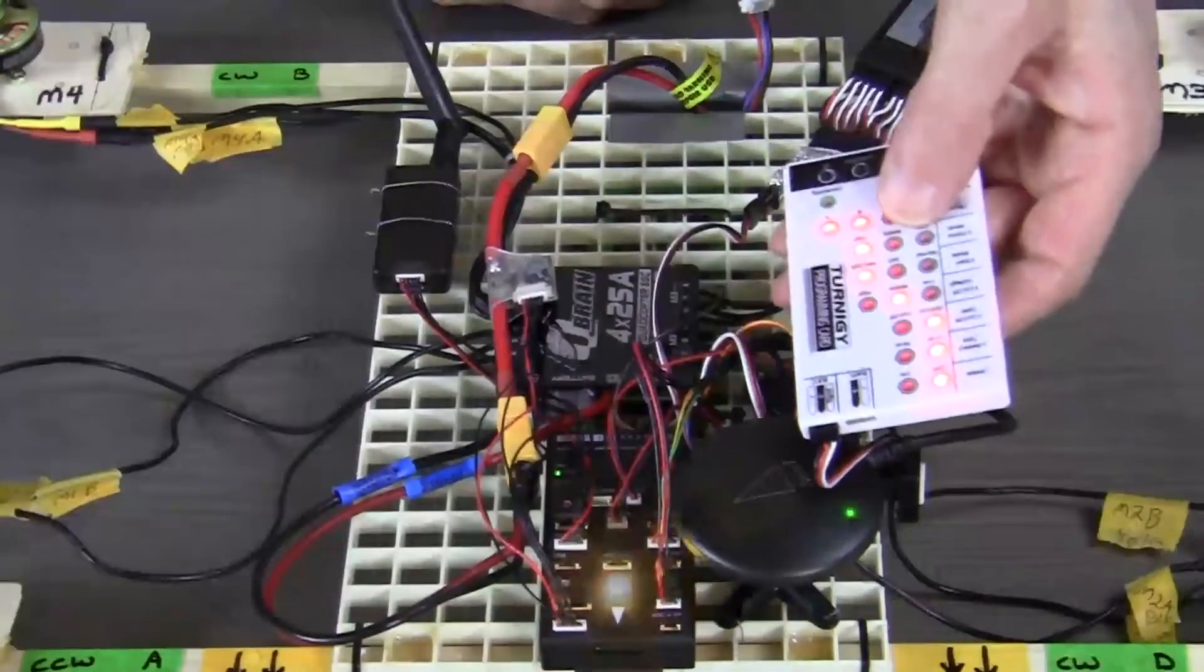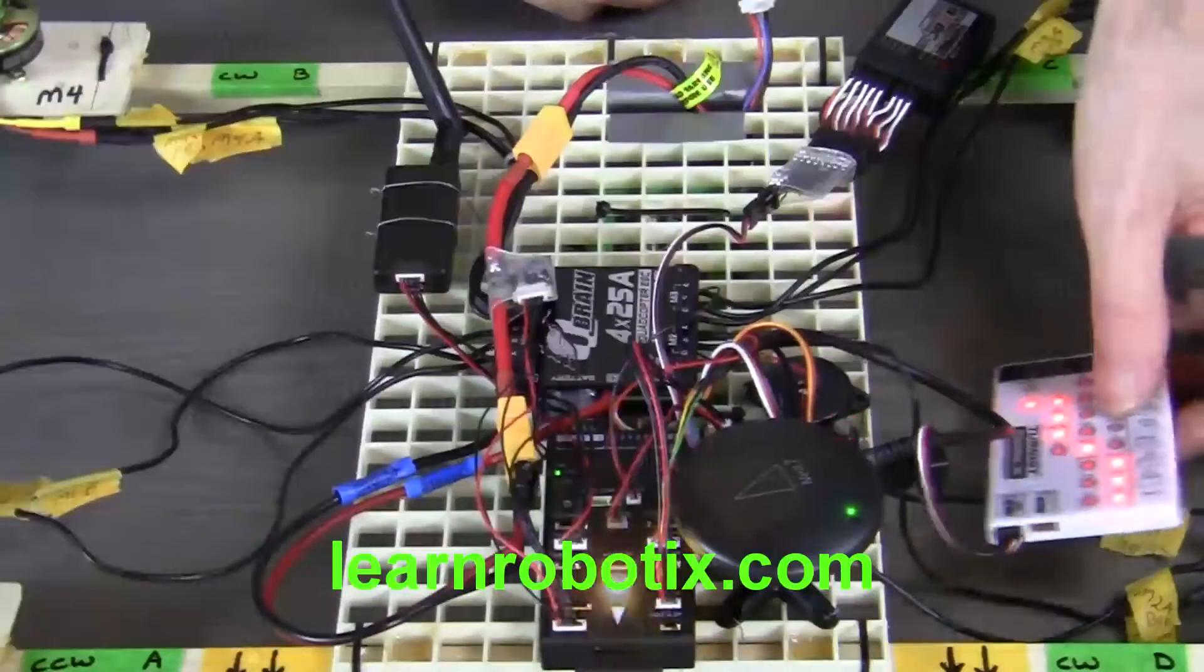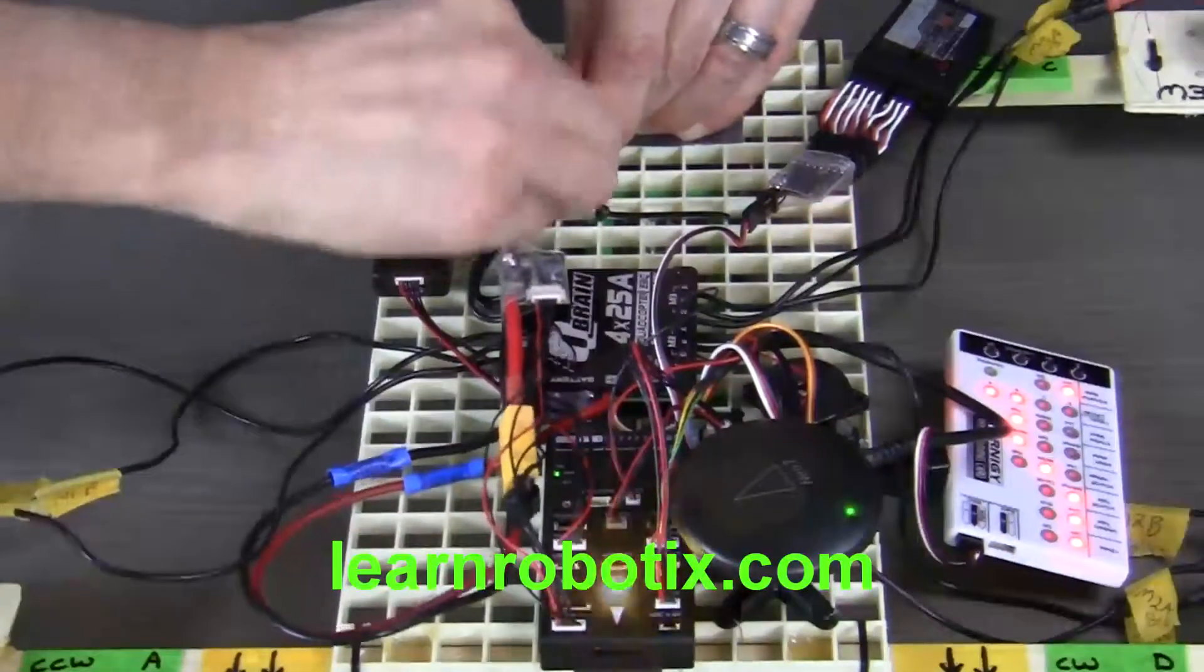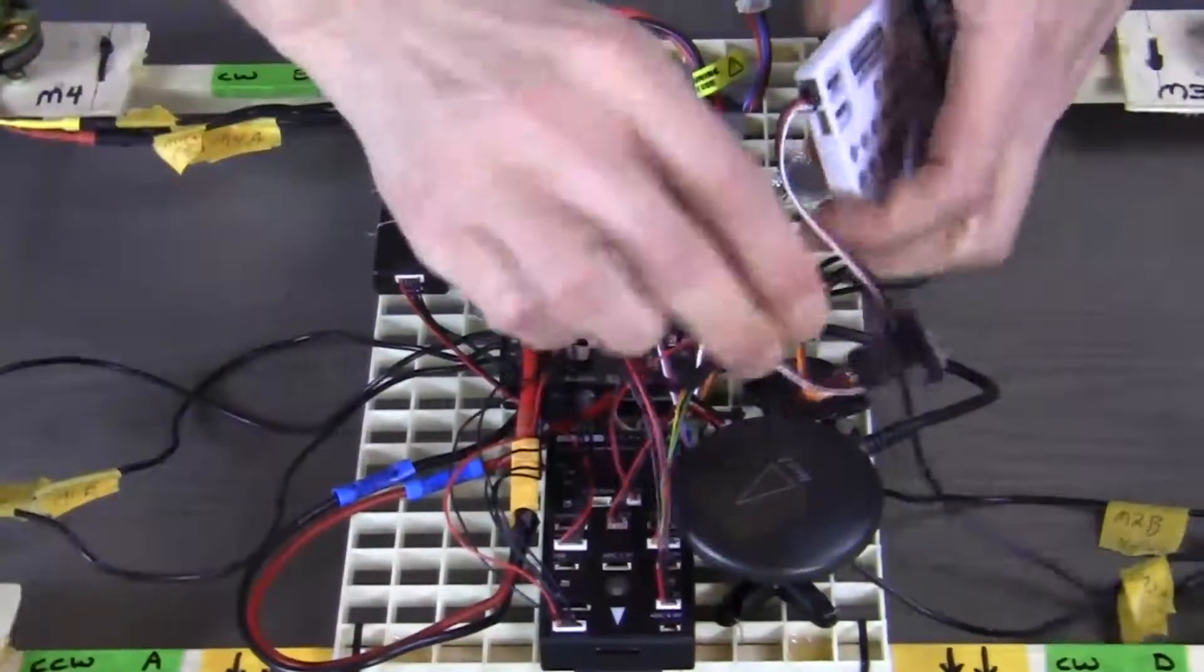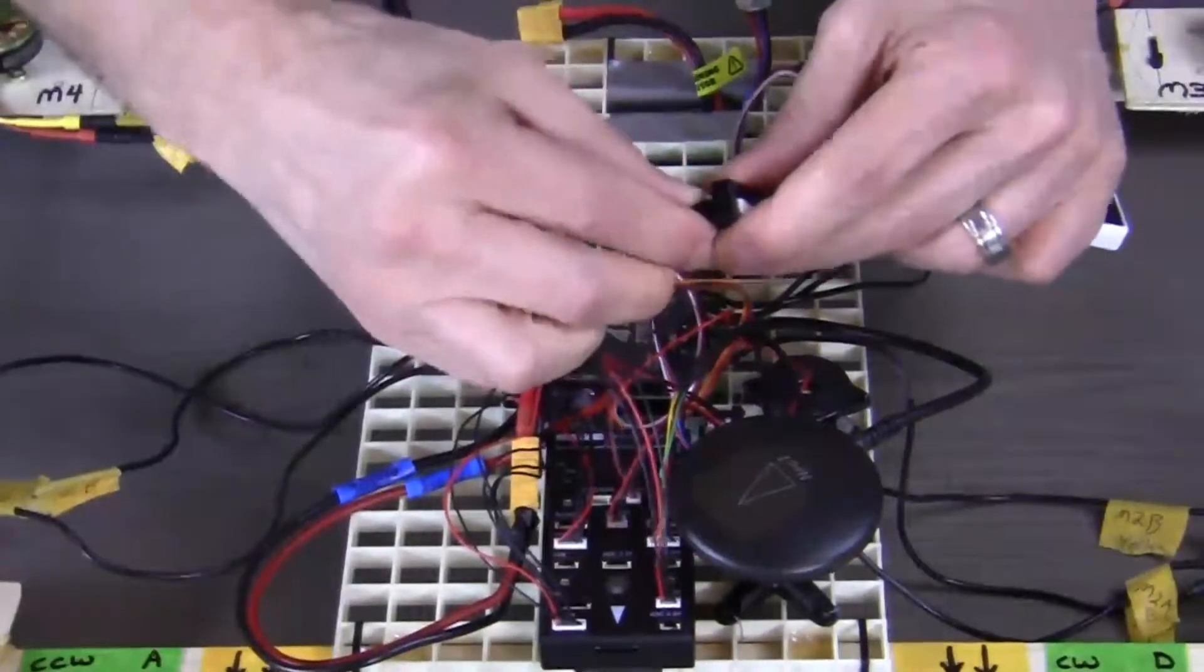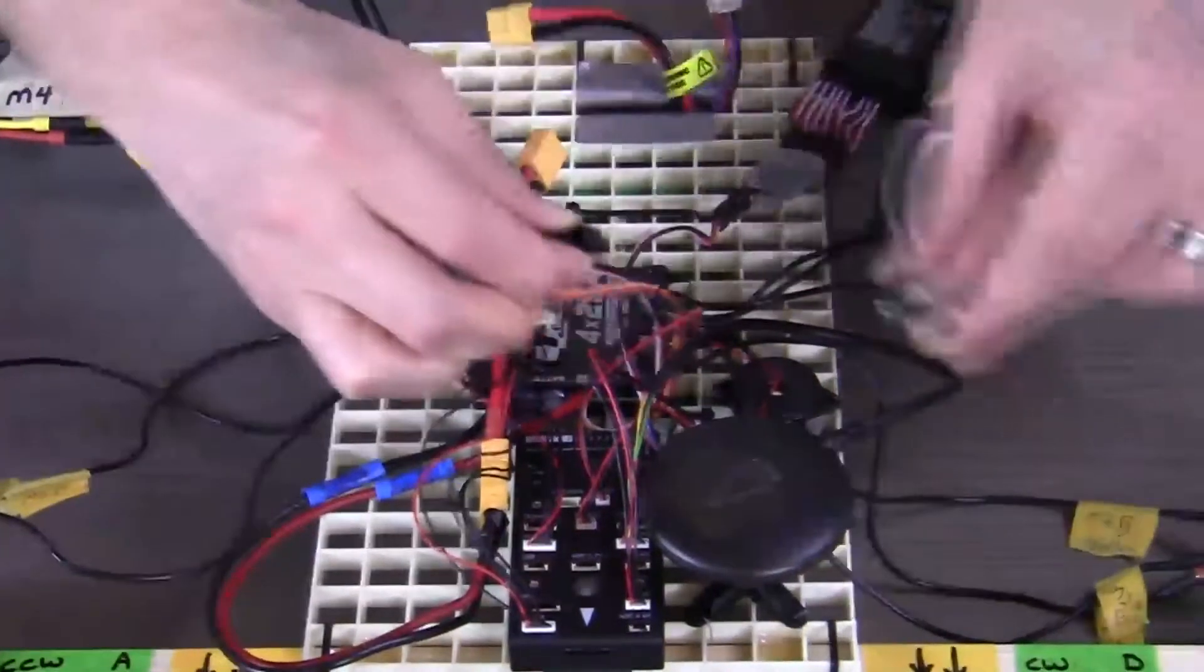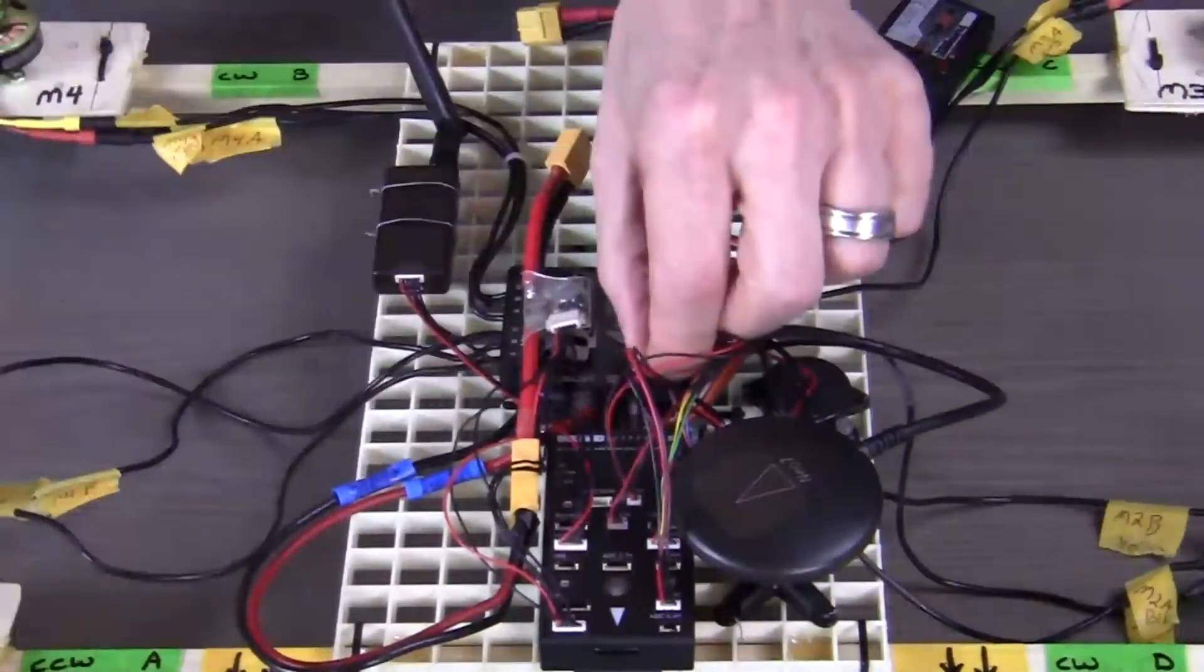Now that we've got the ESC programmed, we can go ahead and disconnect the power first. Then disconnect our ESC signal wires and reconnect them to the PixHawk.